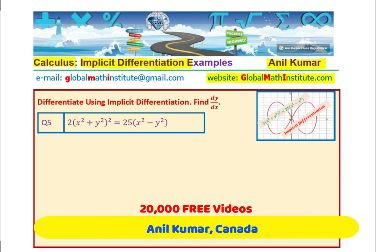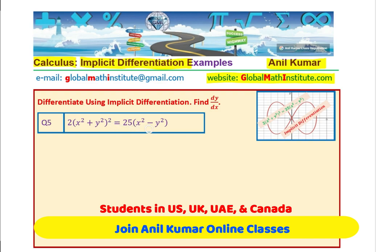It is also question number 5 of one of my workbooks. The question is: 2 times (x² + y²)² equals 25 times (x² - y²). This is a relation given to us and we need to find dy/dx. This is a very interesting relation whose graph is shown here. It is really not a function — it is a relation, and it is kind of difficult to isolate y from this particular relation.